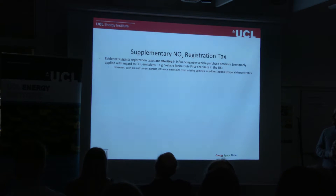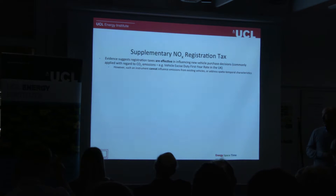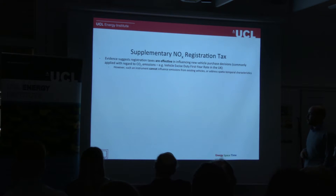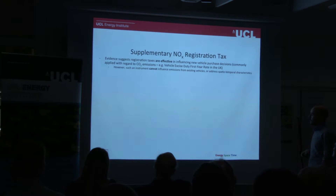The second option is a supplementary NOx-based registration tax — a tax paid either when a car is registered or first purchased. Evidence suggests that such taxes are generally quite effective in influencing purchasing behaviour, and it's been commonly applied in the UK and EU with regard to CO2 emissions, such as the vehicle excise duty. Although such a tax can't influence emissions from existing vehicles, it can only influence emissions from new vehicles purchased, and it can't address when or where such emissions occur.